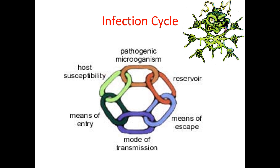The fourth link is the mode of transmission — how the pathogen spreads, either through direct contact, indirect contact, or airborne transmission. The fifth is the means of entry — how the pathogen enters the next host, such as through broken skin, mucous membranes, or needle stick injuries.